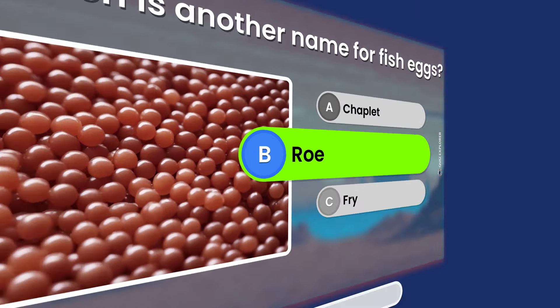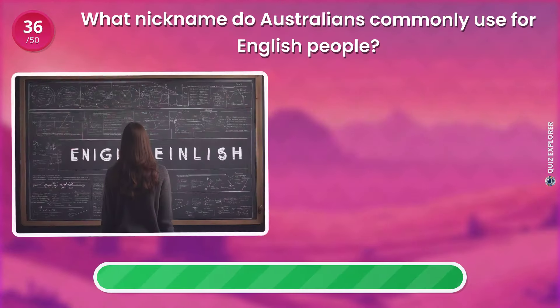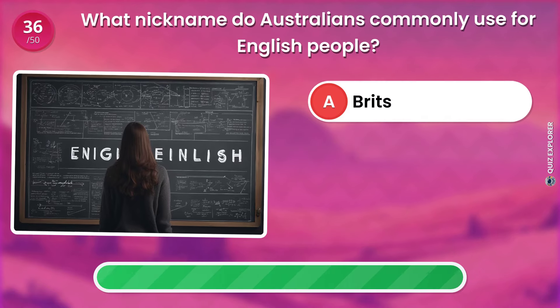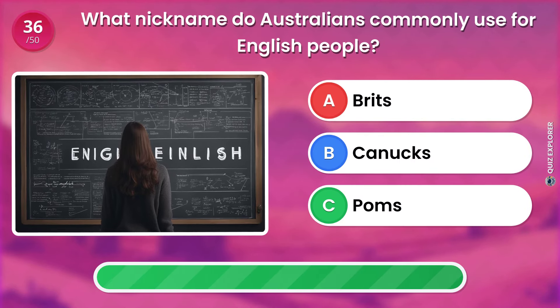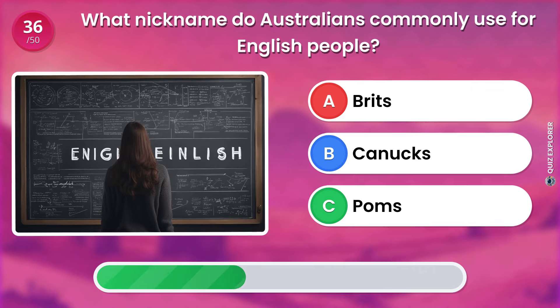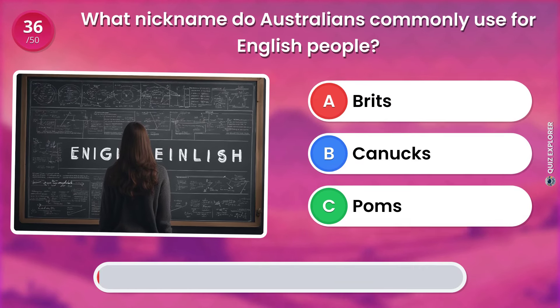What nickname do Australians commonly use for English people? Brits. Canucks. Palms. The answer is: Palms.